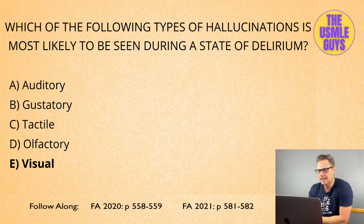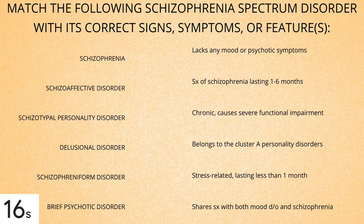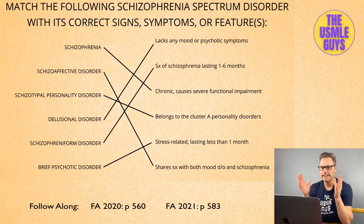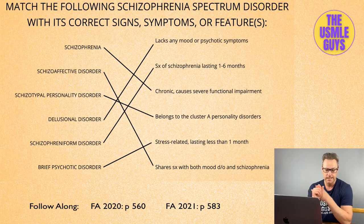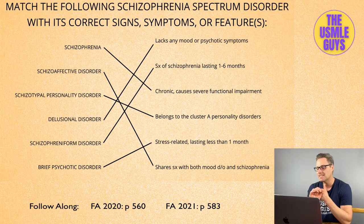Let's move on — we've got another matching exercise. Hit that pause button and come back, and we will discuss the important information you need to know about schizophrenia. Let's start with the big one: schizophrenia. This is seen more often in males than females, and in males it tends to develop much earlier. This is a chronic and highly debilitating illness associated with altered dopaminergic activity, increased serotonergic activity, and decreased dendritic branching.